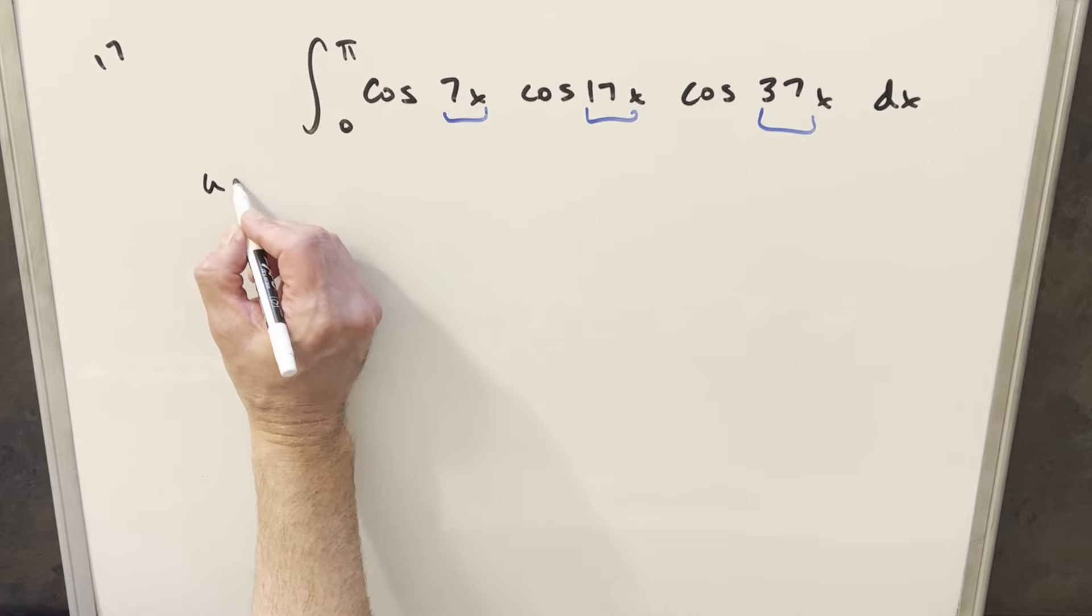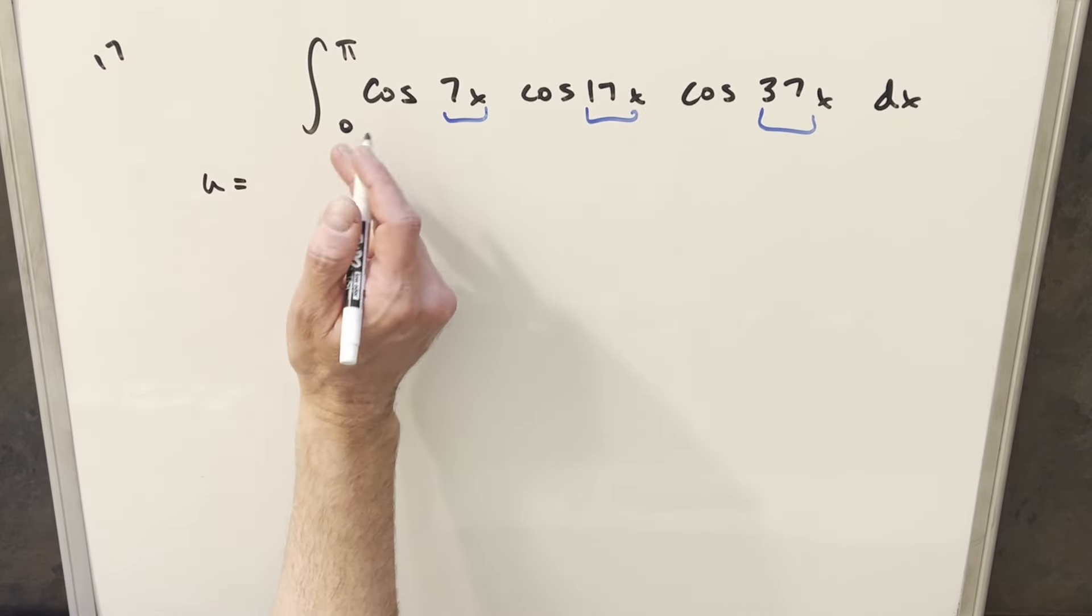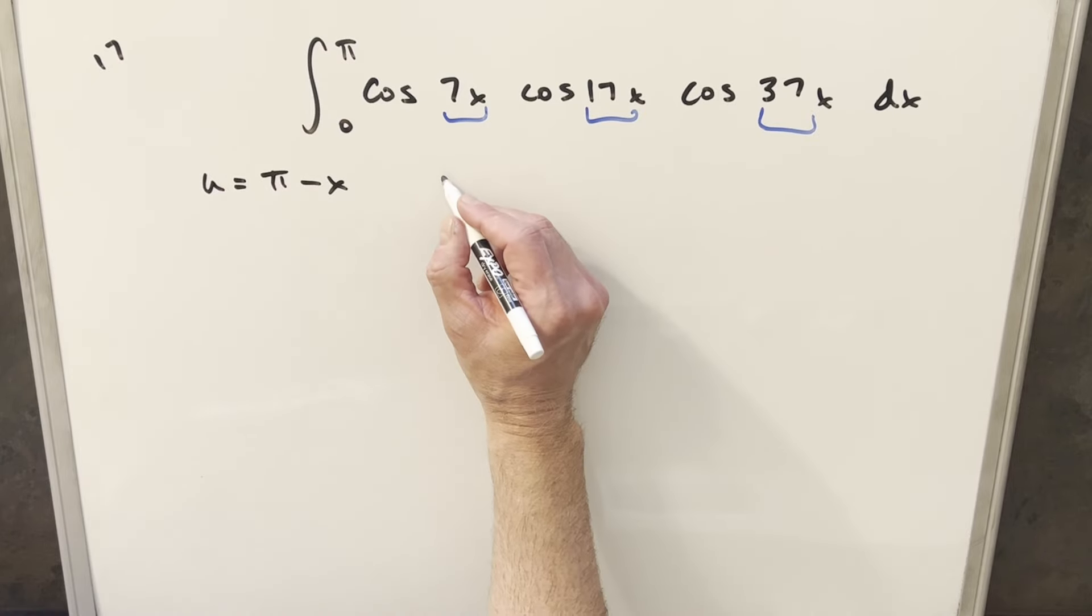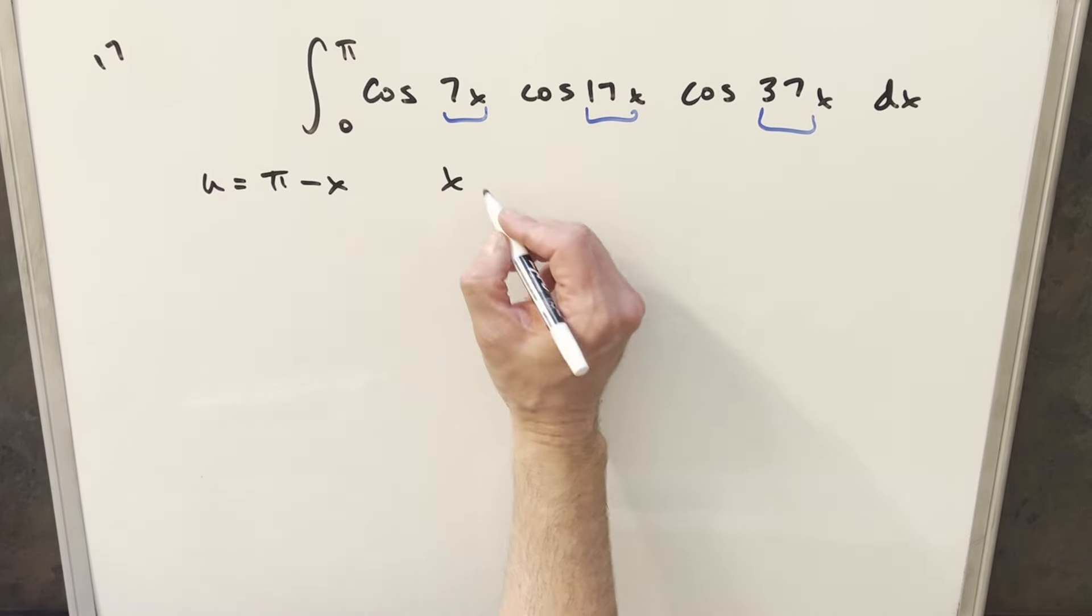And so for the substitution I want to make, I want to make a u substitution just adding the bounds up. Pi plus 0 is just pi minus x. I'll solve for a value for x.